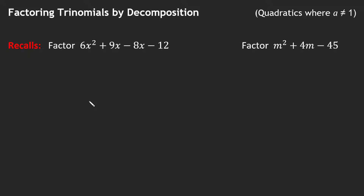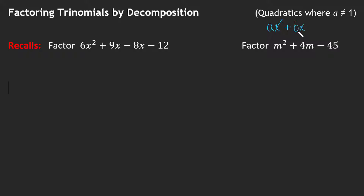Today we are going to talk about factoring trinomials by decomposition. We are going to break apart our algebraic expressions — that's what decomposition means. We're going to focus on when a quadratic or trinomial does not have an A of 1. These are trinomials because there are three terms: a coefficient times x squared, another coefficient times x, and then a constant.